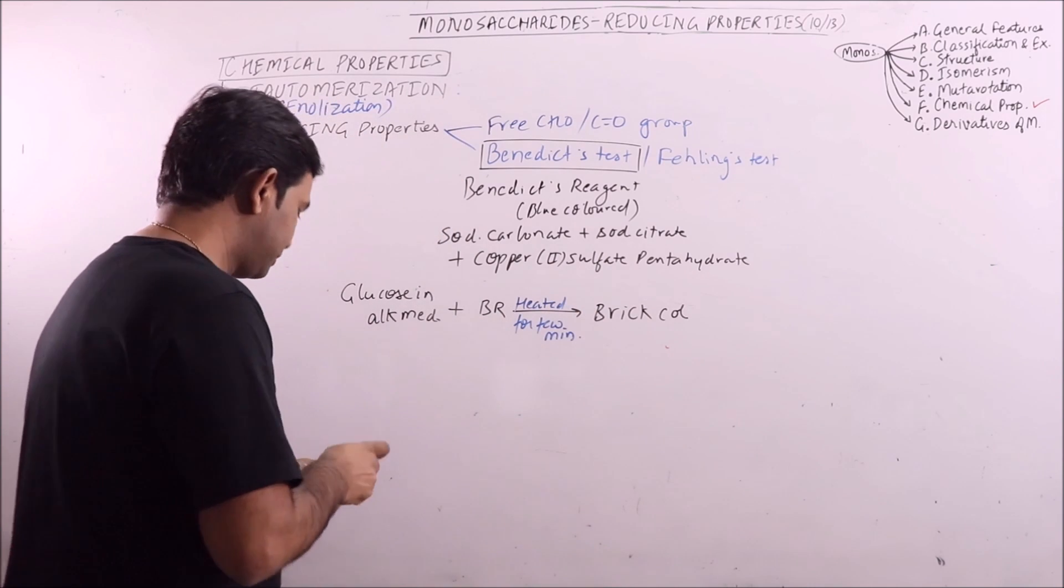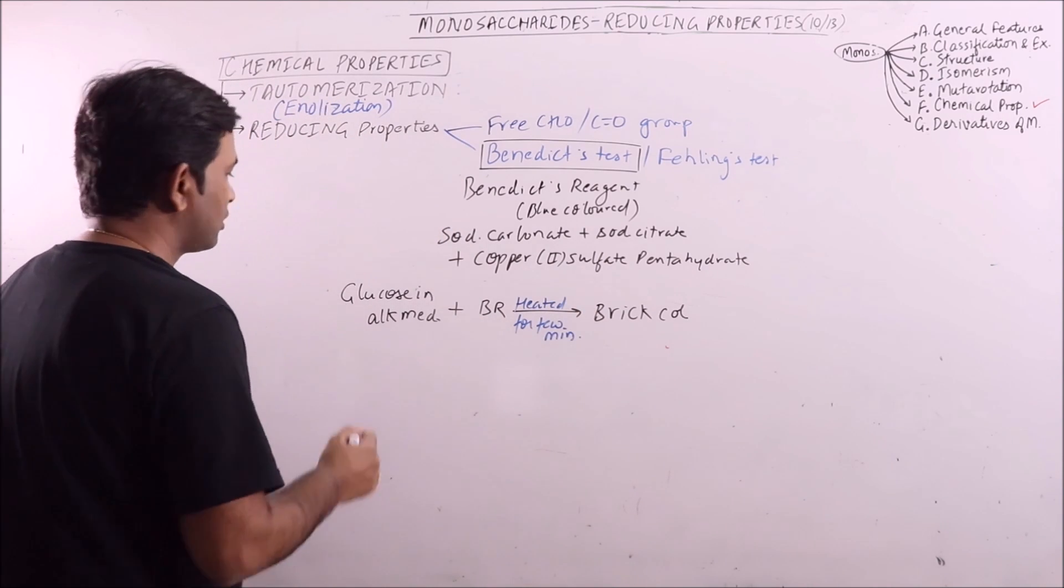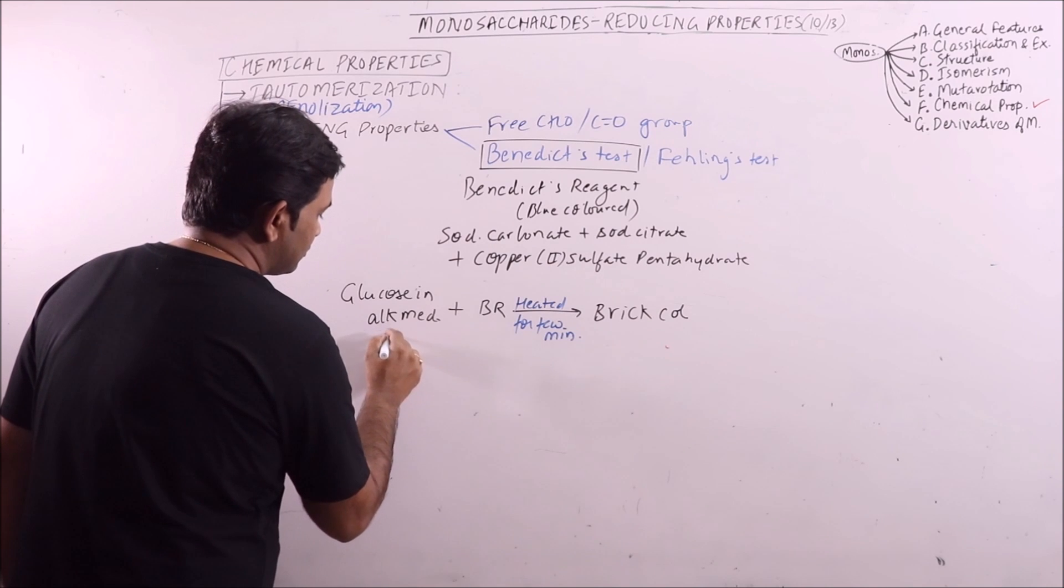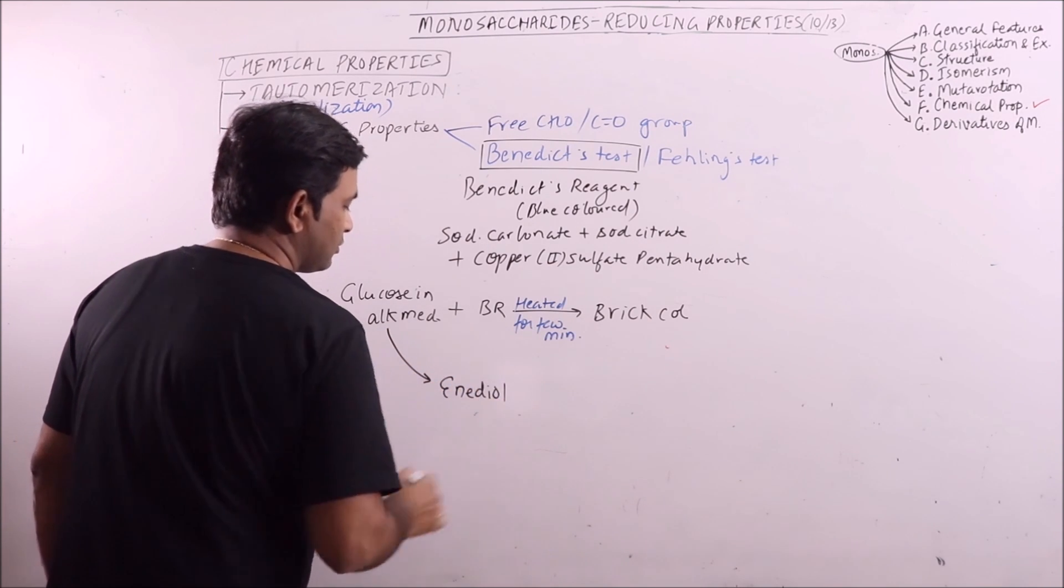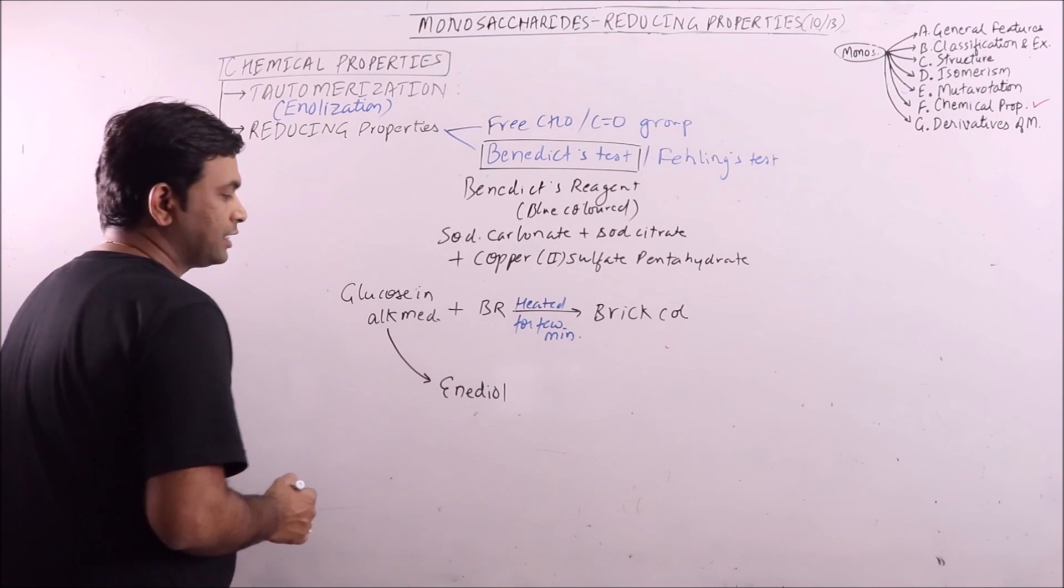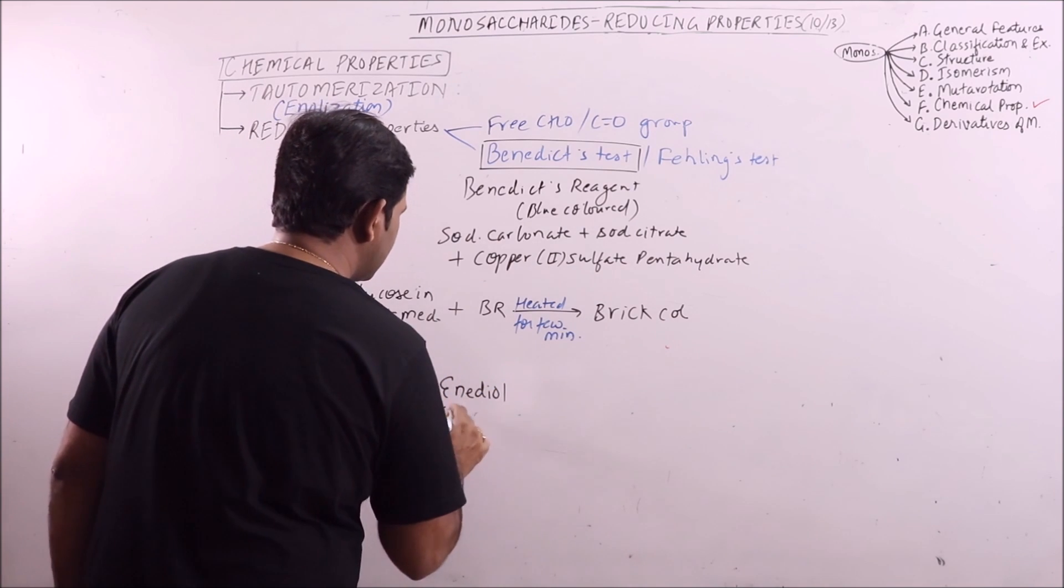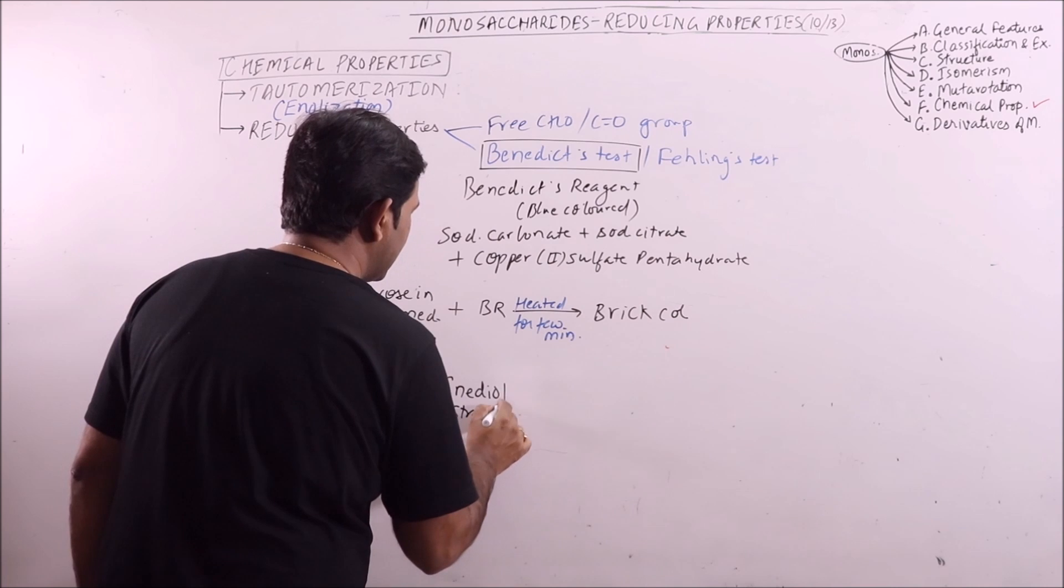Now, what has happened? Glucose is converted to its enediol form. This we have discussed in previous lectures and it is strongly reducing in alkaline medium.